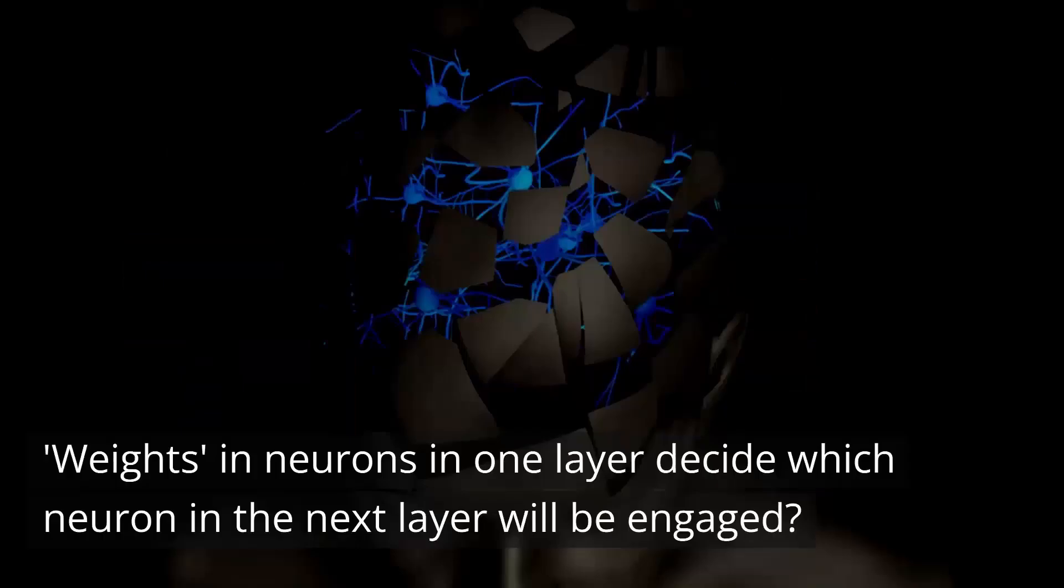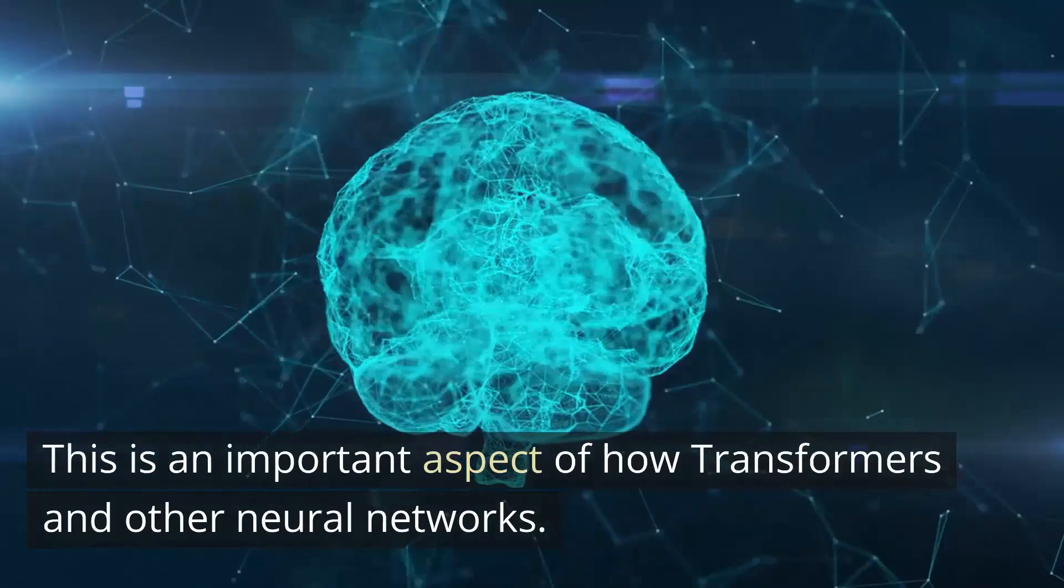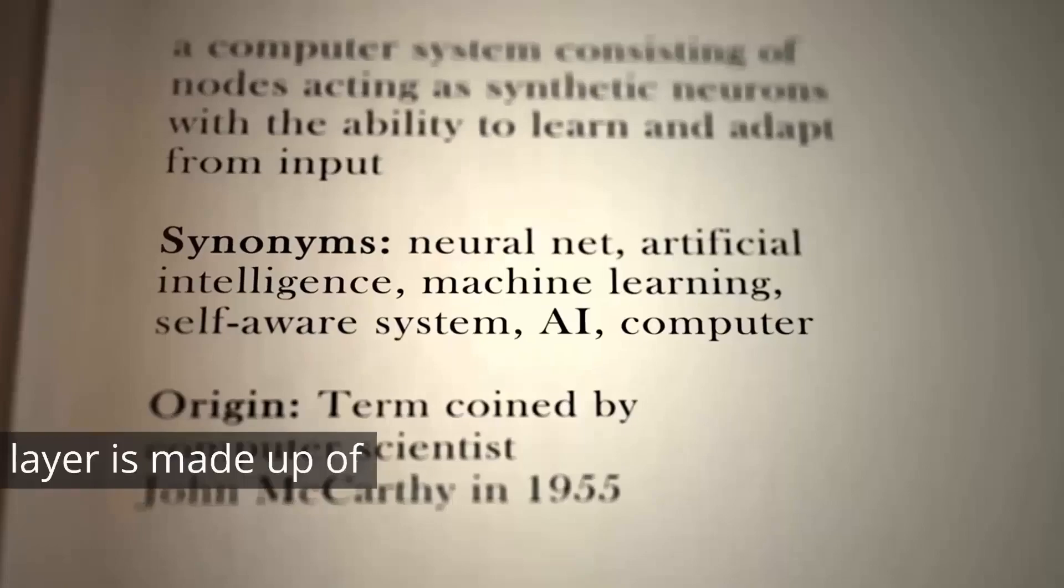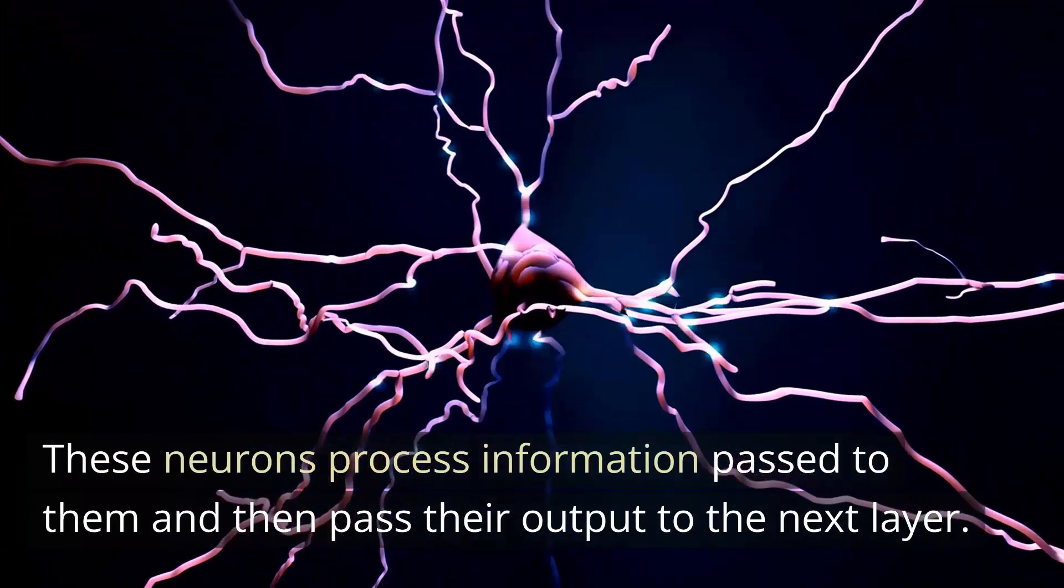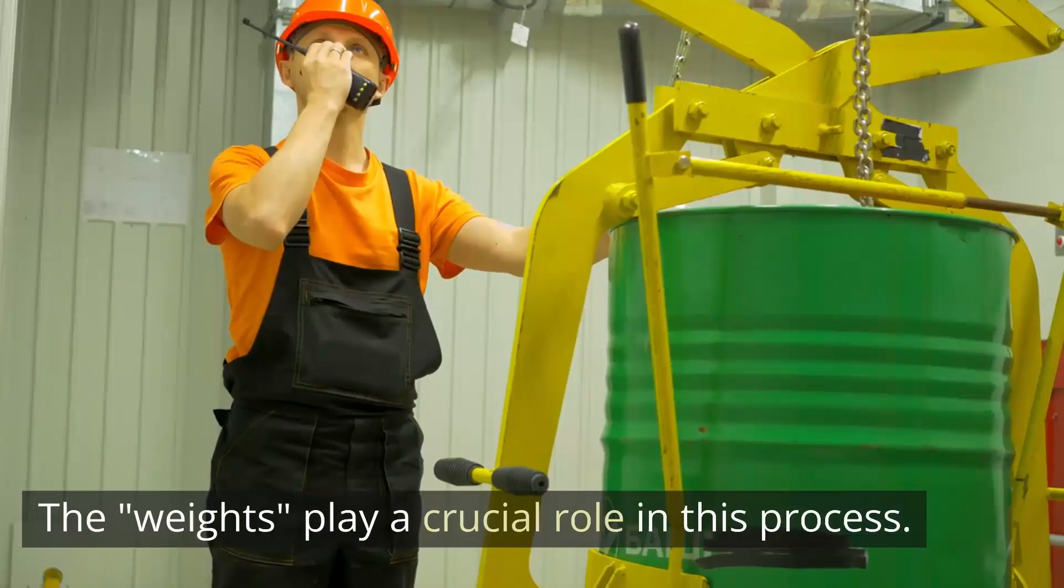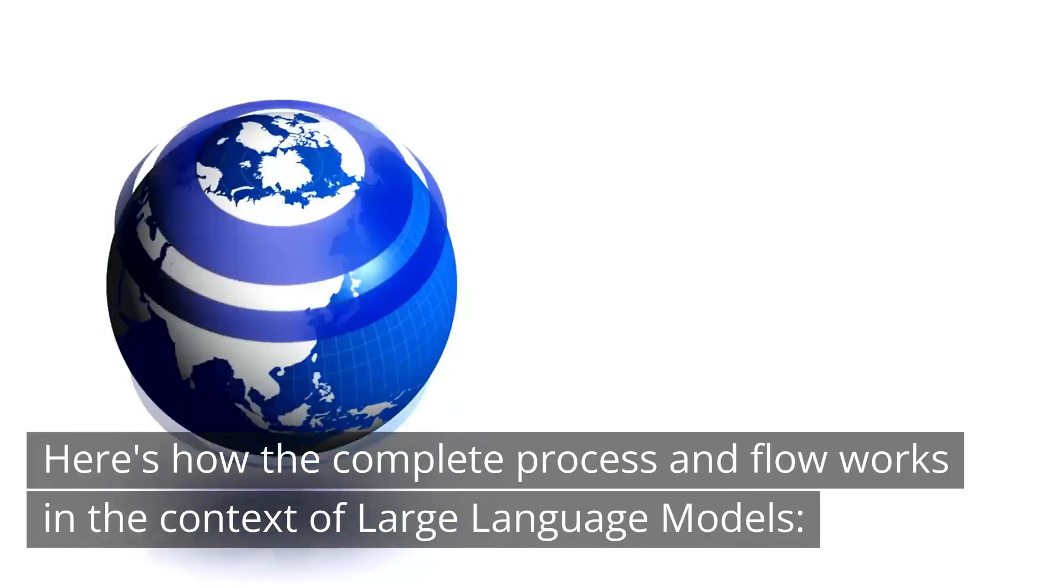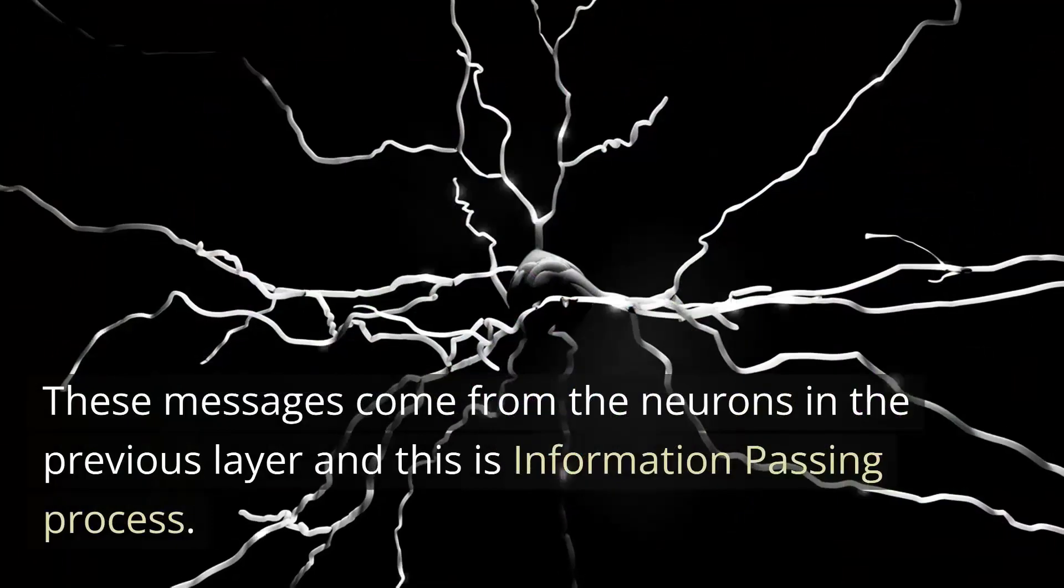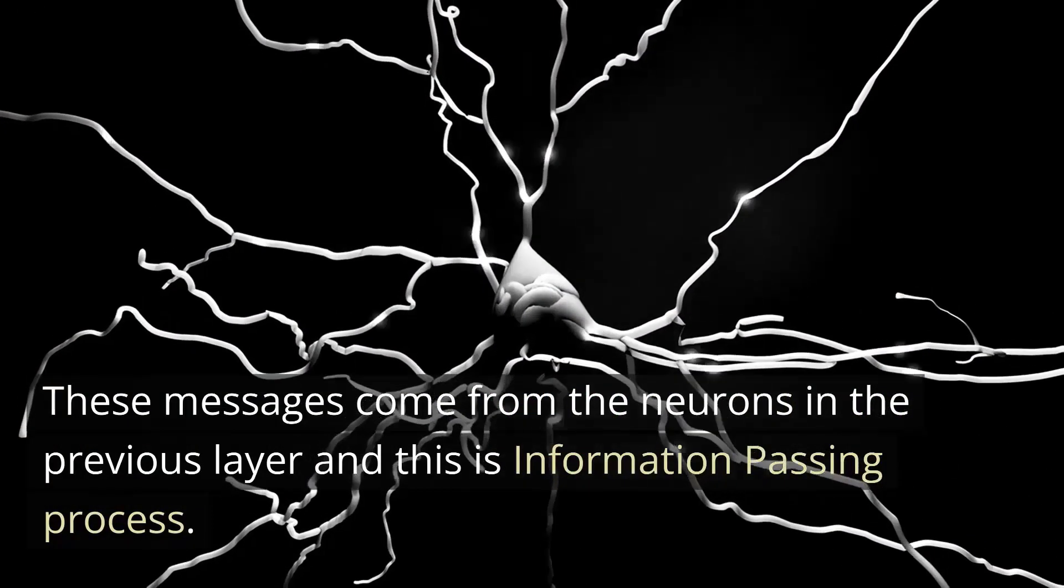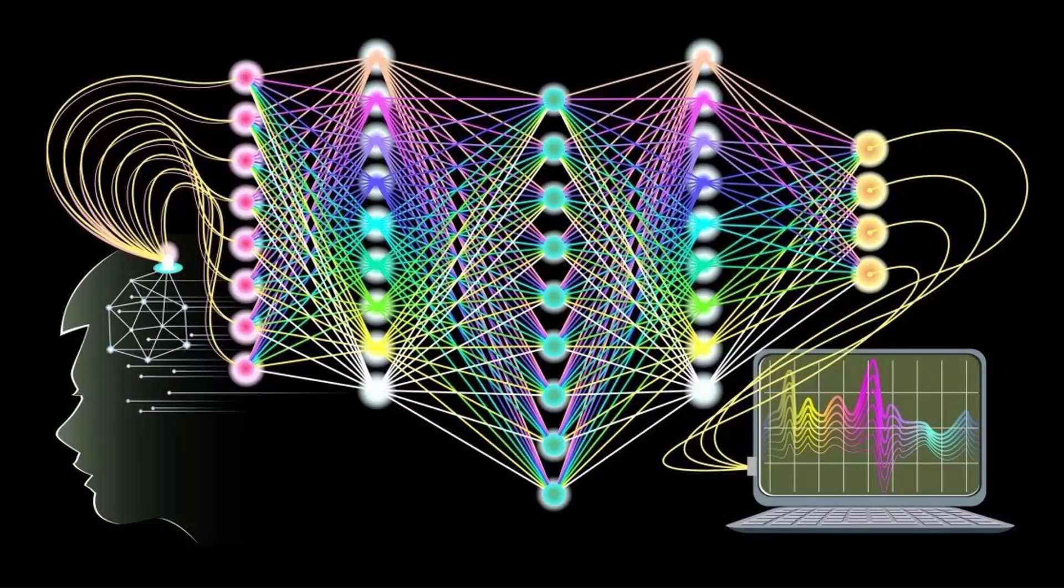Weights in neurons in one layer decide which neuron in the next layer will be engaged. This is an important aspect of how transformers and other neural networks work. Let's clarify this a bit more using a simplified explanation. In a neural network, each layer is made up of artificial neurons. These neurons process information passed to them and then pass their output to the next layer. The weights play a crucial role in this process. Here's how the complete process and flow works in the context of large language models. Imagine that each neuron in a layer is like a tiny program that receives lots of messages in form of data. These messages come from the neurons in the previous layer, and this is information passing process. Each message, data point received, has a certain importance or relevance. The weights act like a filter, deciding how important each message is. A higher weight means the message is more important and should be given more attention.